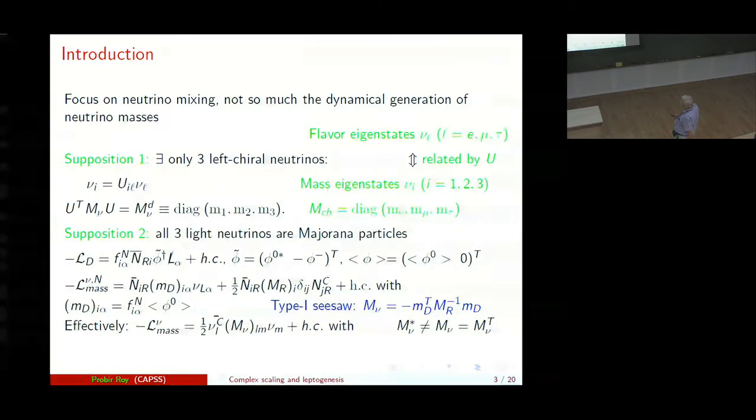And of course we have since M_nu is a complex matrix. Now if you start at the Lagrangian level, we have the Higgs doublet and the right-handed neutrinos. We assume three right-handed neutrinos which are Majorana. And then of course you generate the neutrino mass matrix with the type 1 seesaw mechanism. M_D is the Dirac mass matrix and M_R is the right-handed neutrinos. And you have therefore a complex symmetric neutrino mass matrix.